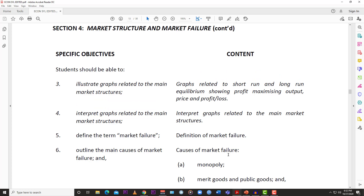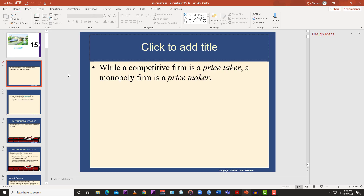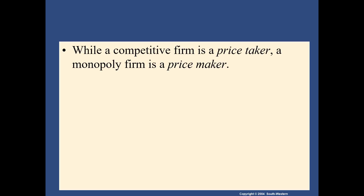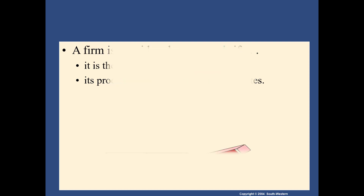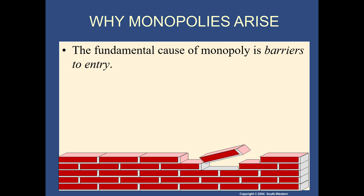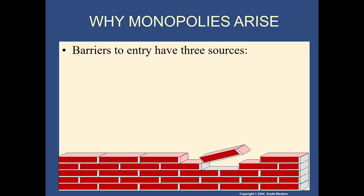Monopoly is a very interesting market structure. While a competitive firm is a price taker, a monopoly firm is a price maker. A firm is considered a monopoly if it is the sole seller of its product and its product does not have a close substitute. The fundamental cause of a monopoly is barriers to entry — that's the main reason why monopolies exist, because it's very difficult for somebody else to get into the market.